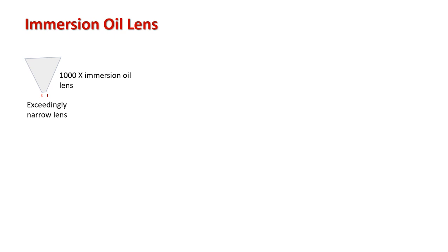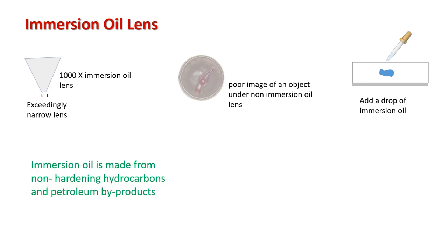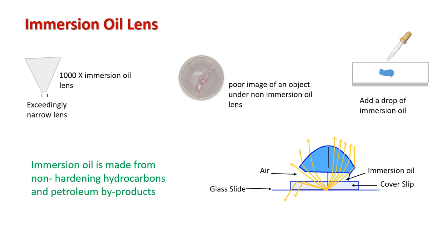However, the oil immersion lens is exceedingly narrow and most light misses it, so the object is seen poorly and without resolution. To overcome this issue, the lens is used with a drop of immersion oil. Immersion oil is made from non-hardening hydrocarbons and petroleum byproducts, and it is placed between the lens and the glass slide. Immersion oil has the same light-bending ability as the glass slide, so when light passes through it, it keeps the light in a straight line that falls on the lens, and resolution becomes clear.